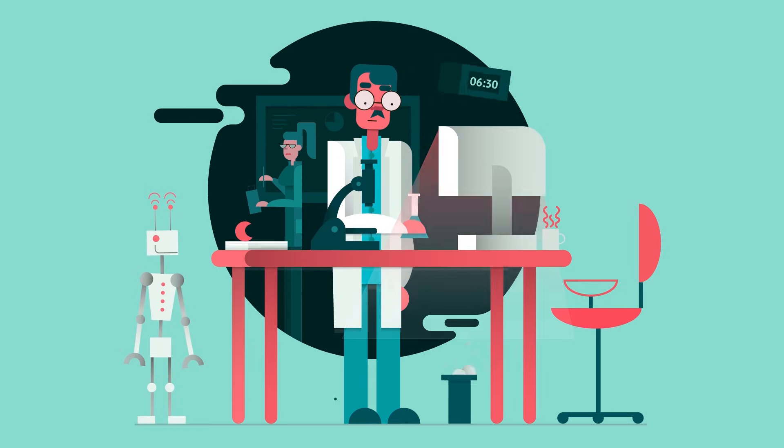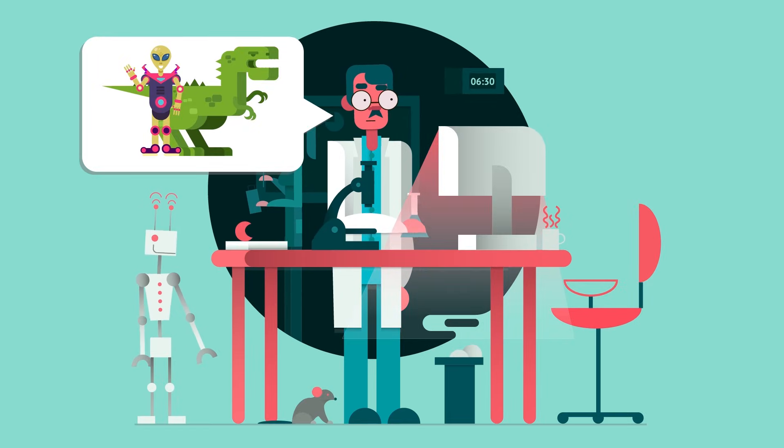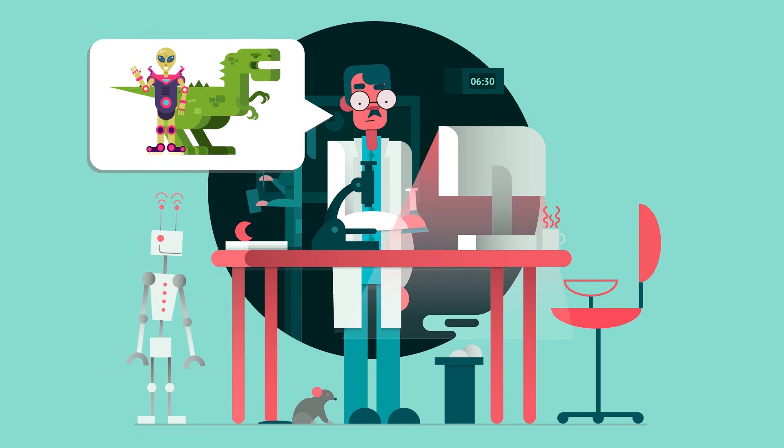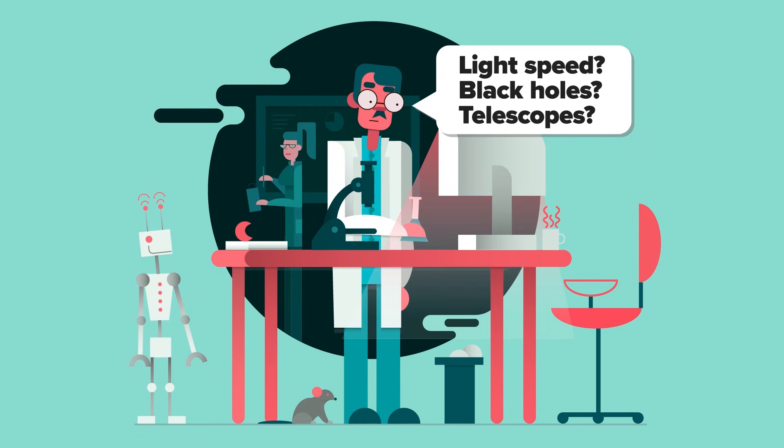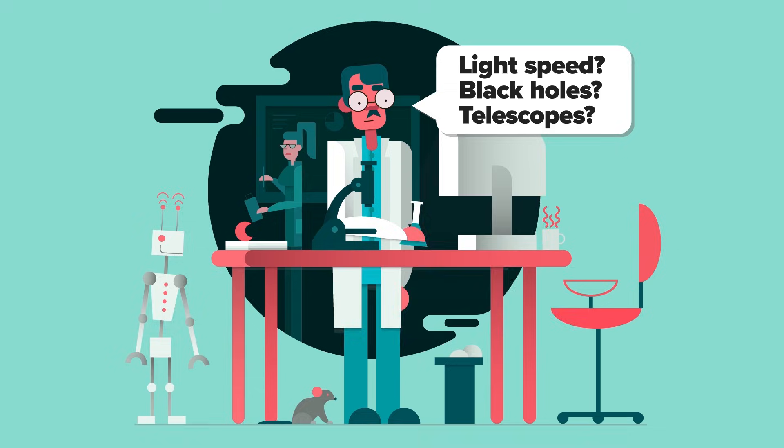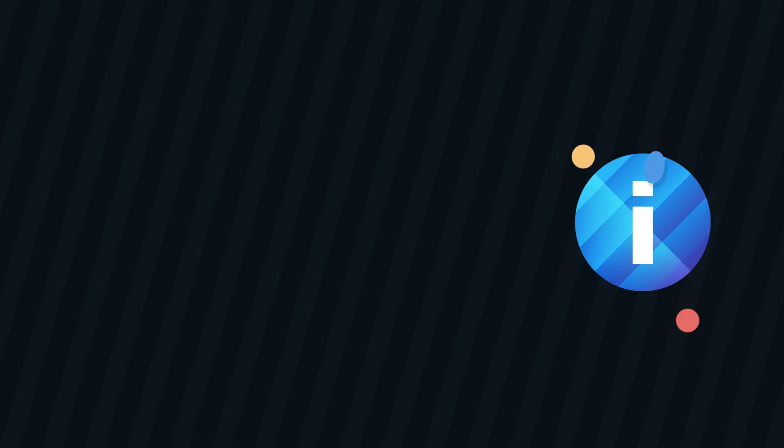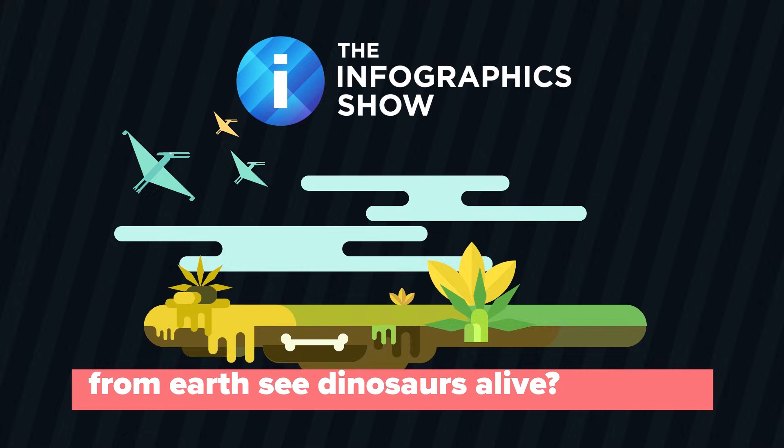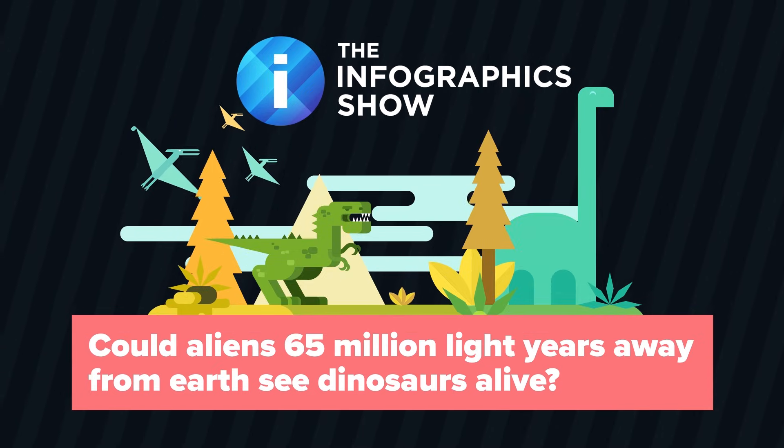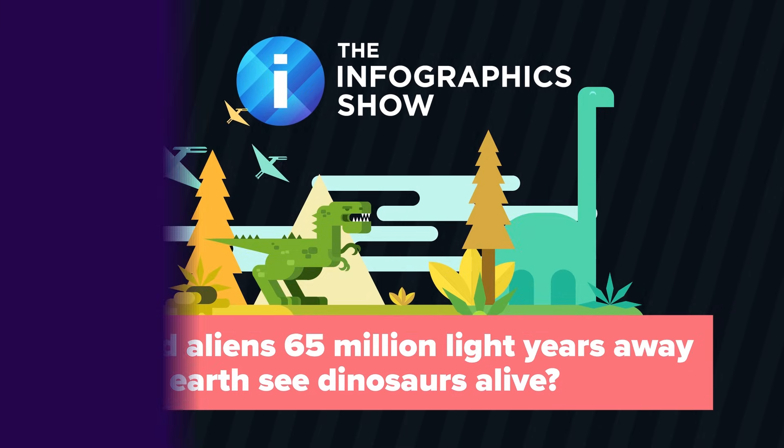We don't usually think about aliens when we think about dinosaurs, but someone by the name of Dr. Matt Kaplan recently asked a very fascinating question about these two subjects. In his search for an answer, he was forced to delve into topics such as light speed, black holes and telescopes. Join him in his exploration, in this episode of the Infographics Show: Could aliens 65 million light years away from Earth see dinosaurs alive?